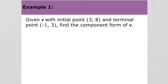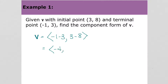So for example, given vector v with initial point (3, 8) and terminal point (-1, 3), find the component form of v. So it would be: starting with the terminal point, negative 1 minus 3 – the x value of the terminal point minus the x value of the initial point – and then the y value of the terminal point minus the y value of the initial point. So vector v is denoted as negative 4, negative 5.